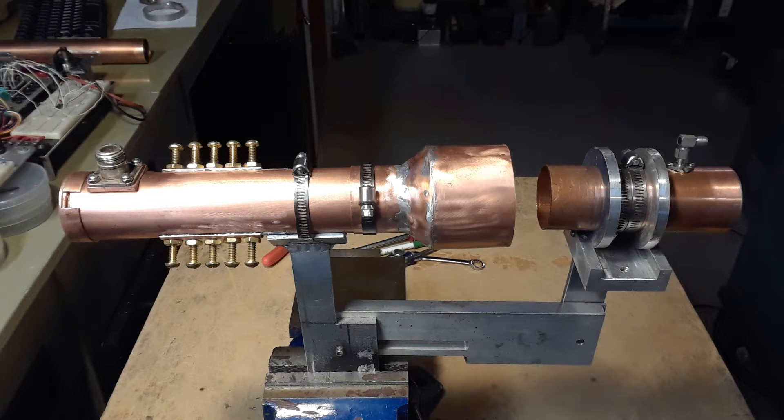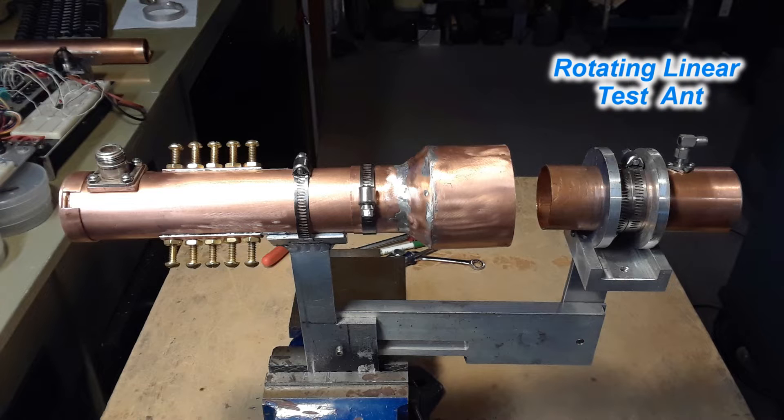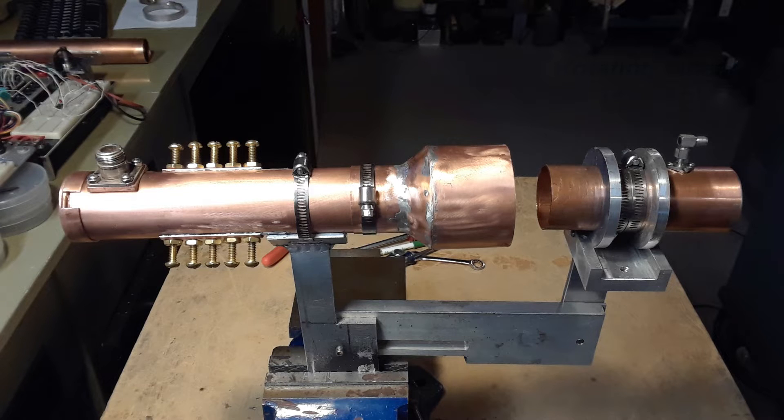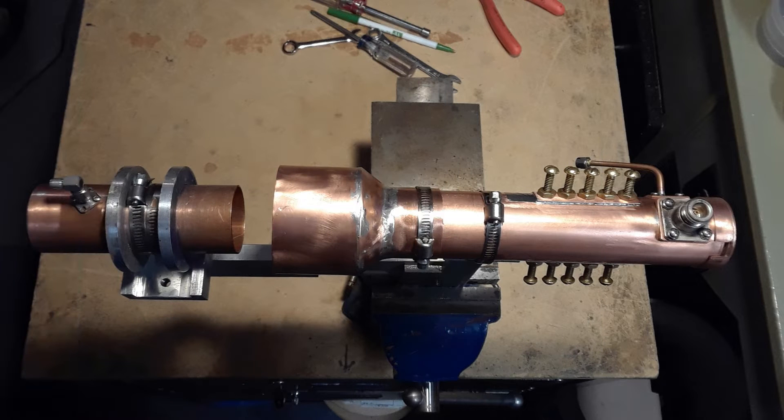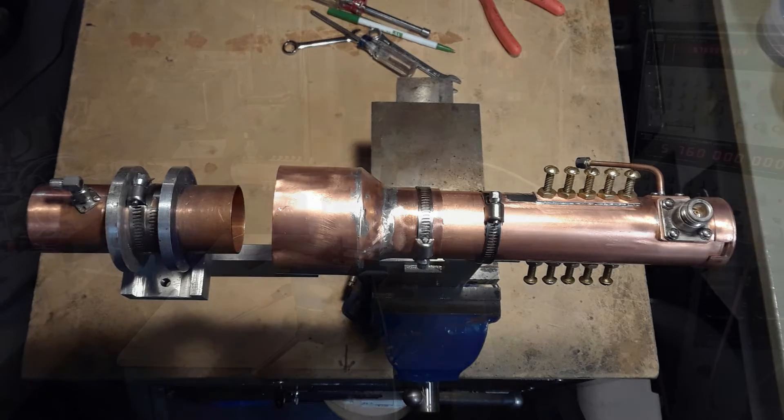So this is the test stand or test jig I built which clamps the new feed solid and allows me to rotate the linear feed antenna. The rotating antenna on the left is solidly clamped and is allowed to rotate 360 degrees, mostly just from vertical to horizontal with respect to the two probes in the new feed.